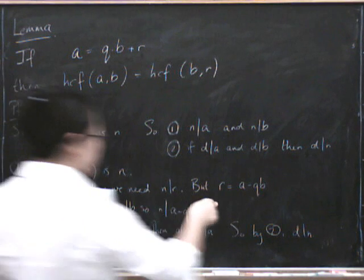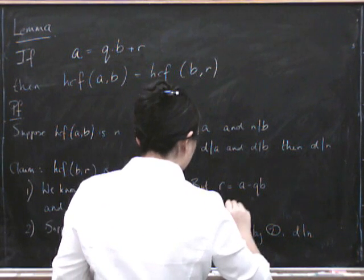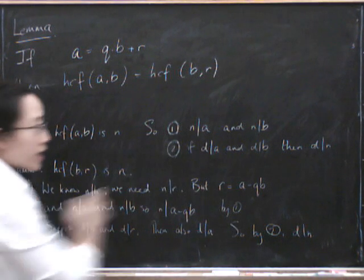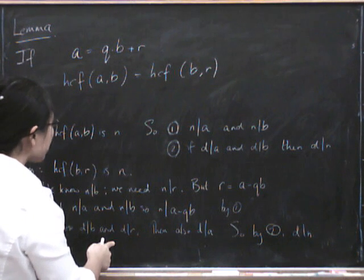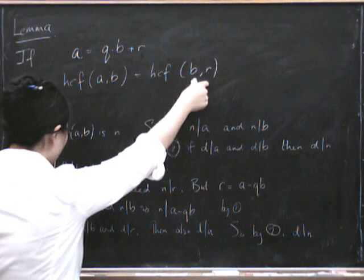So this part, this part is by 1. So condition 1 caused condition 1 to be true, and condition 2 caused condition 2 to be true. So we have shown that A and B have the same highest common factor as B and R.